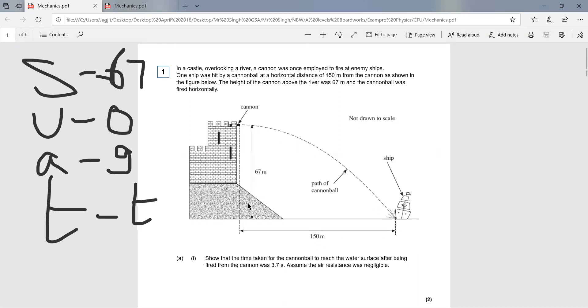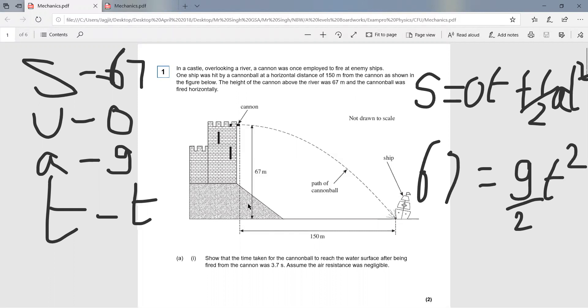We use the equation s equals ut plus half at squared. Rearranging that, you get 67 equals g over 2 times t squared, which when we solve as a quadratic gives t as 3.7 seconds.